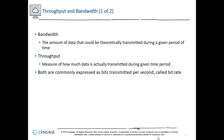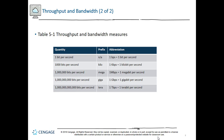We measure throughput in bits per second — lowercase 'b'. The units are: bit per second, kilobit per second, megabit per second, gigabit per second, and terabit per second. It's important to distinguish throughput from storage: we measure storage in bytes, which is eight times the amount. So your hard drive might be a gigabyte drive, but your network speed is gigabit.